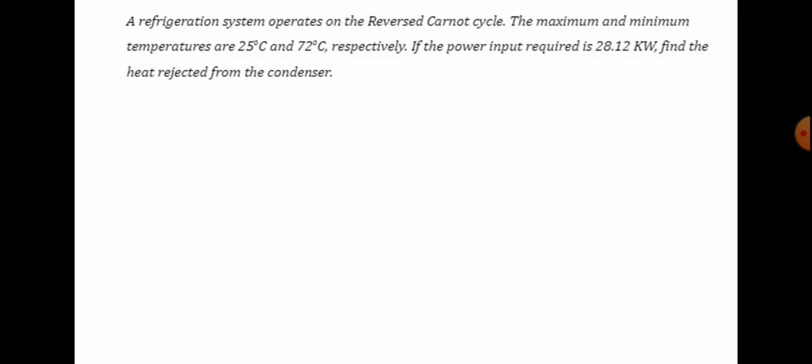Hello guys, welcome to our video tutorial. Today our topic is all about the refrigeration cycle. Here is our sample problem: A refrigeration system operates on the reverse Carnot cycle. The maximum and minimum temperatures are 25°C and 72°C respectively. If the power input required is 28.12 kilowatts, find the heat rejected from the condenser.